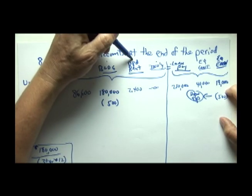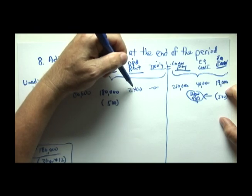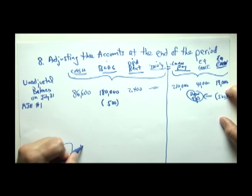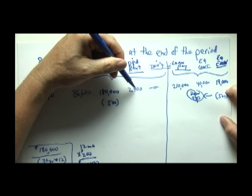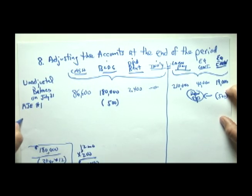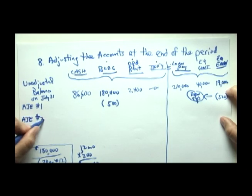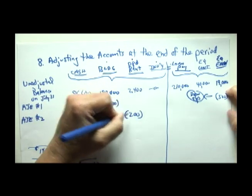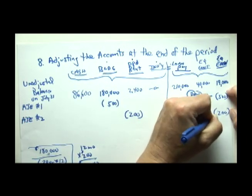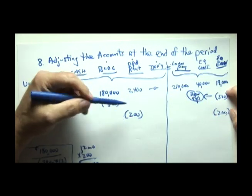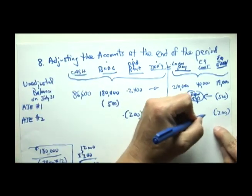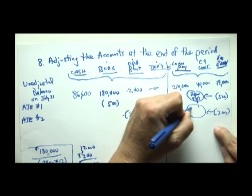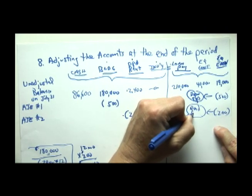The next question is, what about prepaid rent? Remember, we bought 12 months worth of rent, 12 months, at $200 a month. So, our monthly rent is $2,400. But we paid $2,400 in advance. Now that the month of July has gone by, we've got to show that one-twelfth of that prepaid rent has now become an expense. It's like an expired cost. The cost of rent was $2,400, but now that $200 of it has expired, it becomes part of our reduction in equity earned. And we're going to call this rent expense.